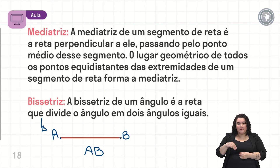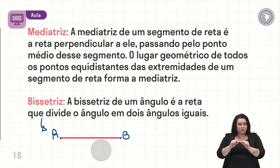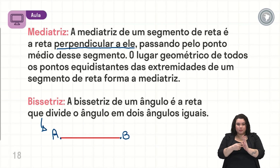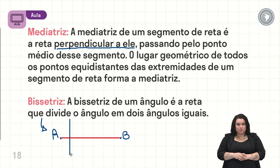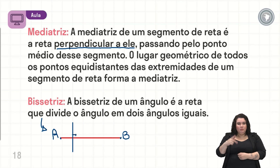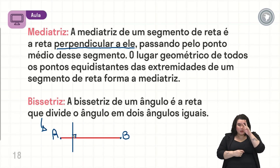A mediatriz de um segmento de reta... temos aqui o nosso segmento de reta AB. Ela é perpendicular a esse segmento. O que é uma reta perpendicular? Vou colocar uma reta bem aqui. Aqui é uma reta — se ela é perpendicular, ela está formando, olha só o ângulo aqui com o segmento AB, um ângulo de quantos graus? Um ângulo de 90 graus. Aqui eu tenho uma reta perpendicular.